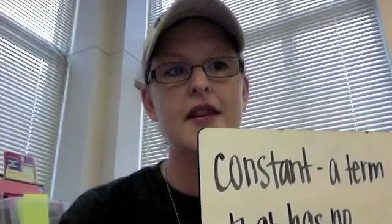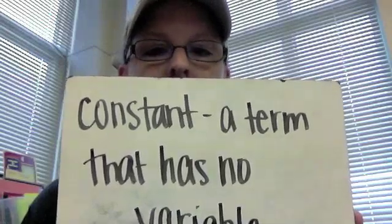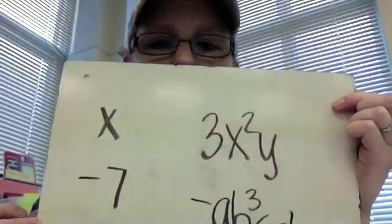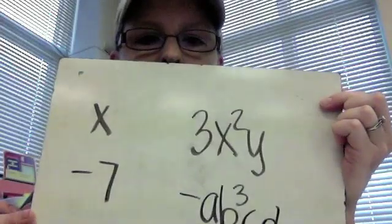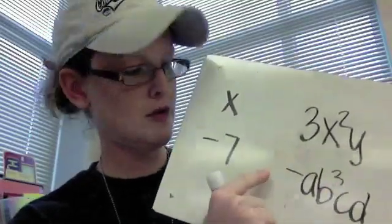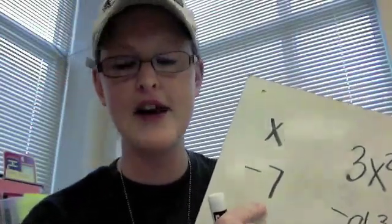The third definition tonight is constant. If we think about what the word constant means, constant means something that doesn't change. In math, if it doesn't change, that means it doesn't have a variable. So a constant is a term that has no variable. A term that has no variable. So if we look at our examples over here, you can pick out the one thing that doesn't have a variable. The thing with no variable is negative 7. Negative 7 is our constant. It doesn't have a variable.